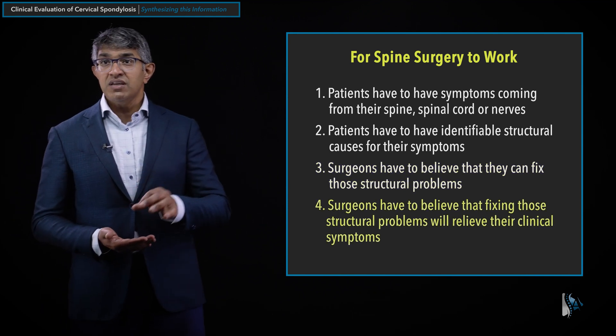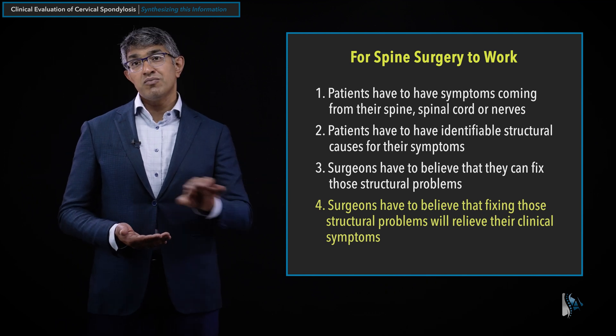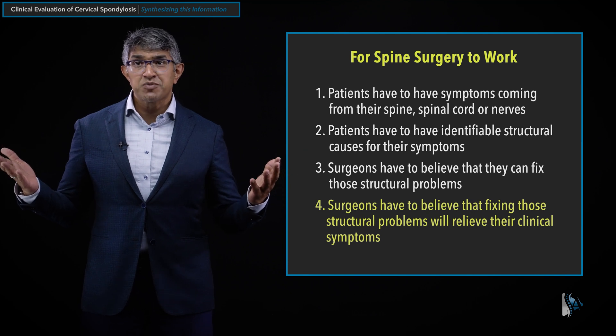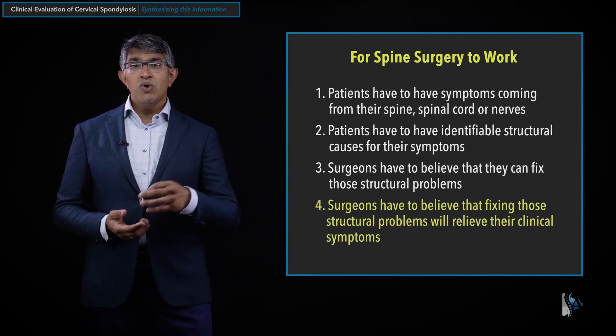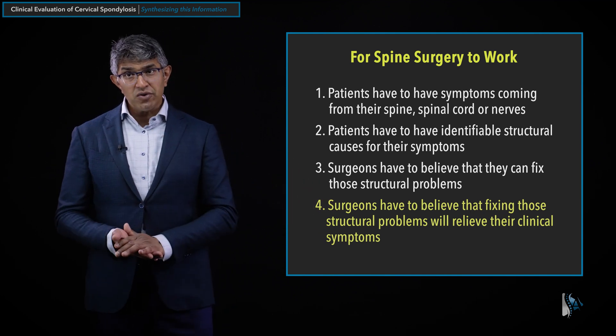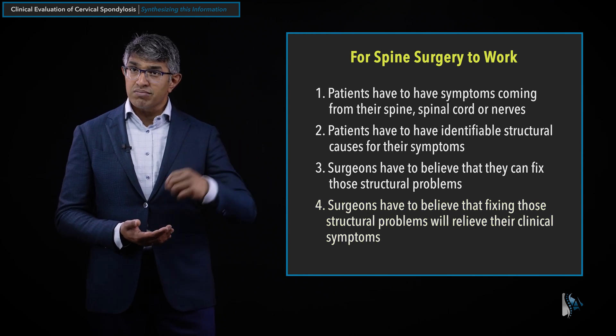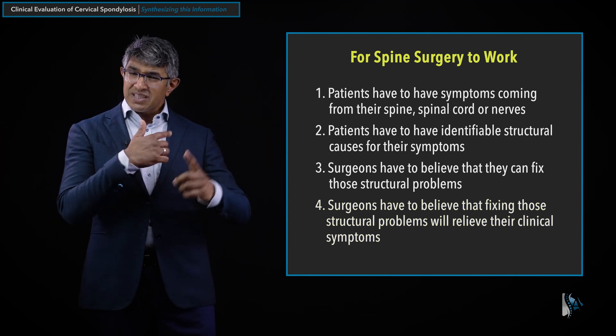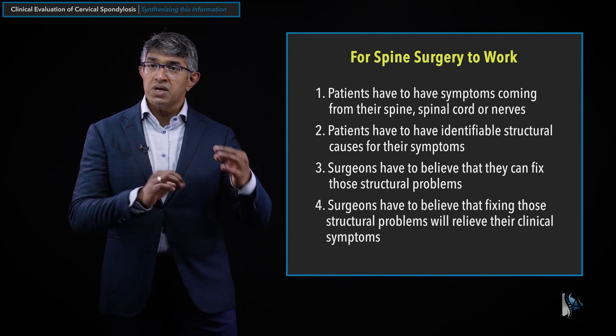Lastly, rule number four: you have to believe that fixing that structural problem is going to give the patient relief. Sometimes people have permanent nerve damage where you take the pressure off the nerve but don't expect symptoms to get any better — that's not really effective. Patients have the expectation that their symptoms will improve, so you have to believe fixing the structural problem will relieve their clinical symptoms. We'll focus primarily on rules one and two during clinical evaluation, and later discuss surgical decision making.